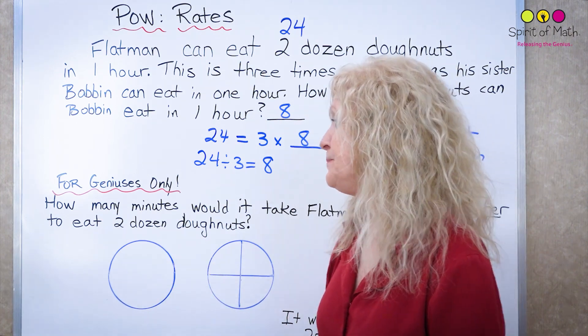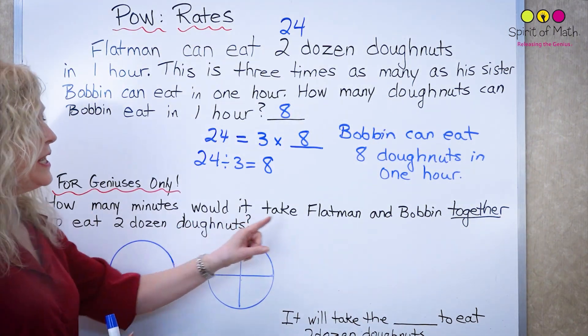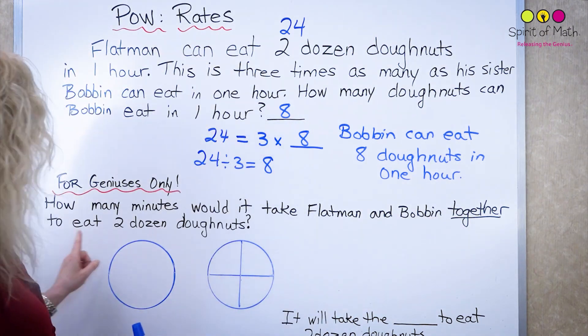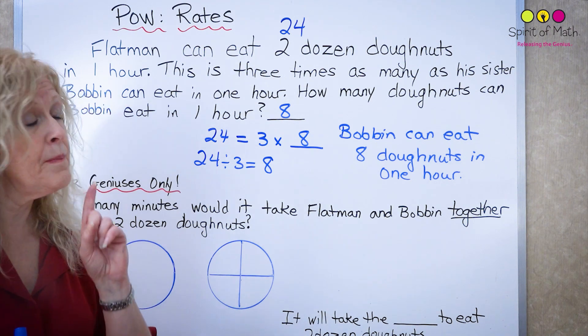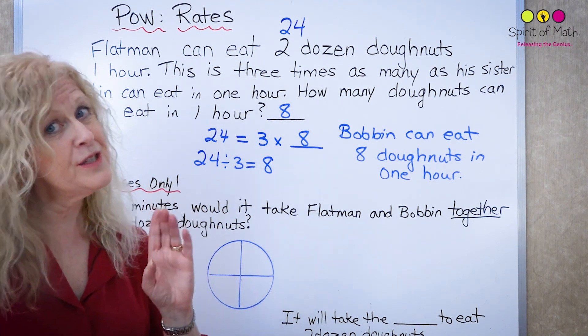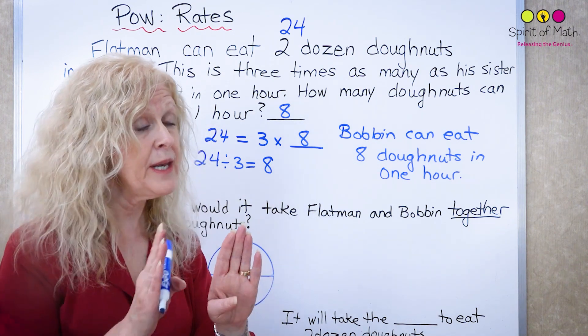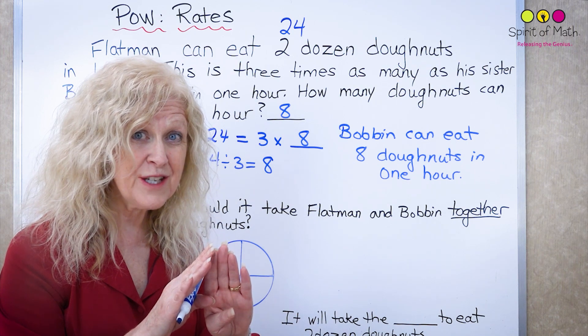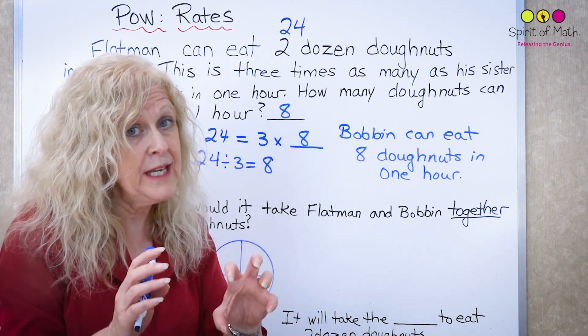It says here the question says how many minutes would it take Flatman and Bobbin together to eat two dozen doughnuts? So we know that Flatman on his own can eat two dozen in one hour but if you have Flatman and Bobbin together how fast can they eat the two dozen doughnuts? It should be faster than one hour because both of them are eating.